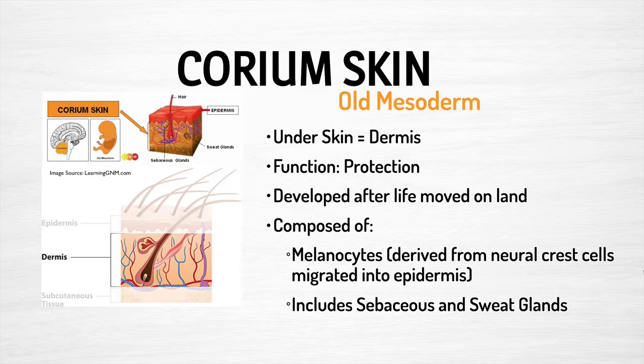So let's talk about the corium skin or the dermis. This is the deep underneath layer of the skin. It is an old mesodermal-derived tissue, and its function is protection. The point that it evolved in human history was after life moved on land — after organisms were primarily water-dwelling and moved onto land. As you move onto land, there are a new set of challenges, including the concept of having something unwanted on your skin — feeling soiled or dirty, or having some type of attack on this part of your skin.